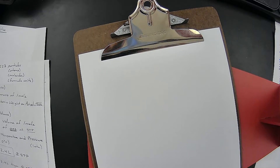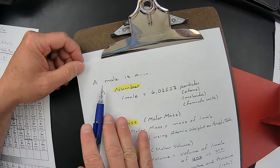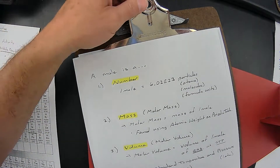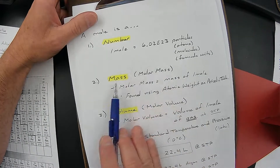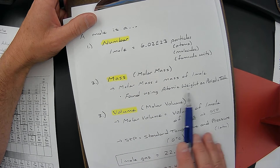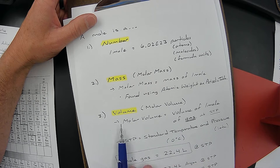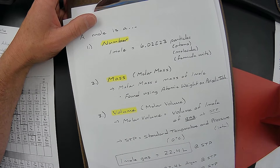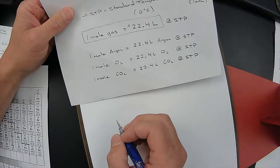Before beginning, I want to review what we've covered so far. In this unit, we've talked about the idea of a mole. A mole is equal to multiple different units. A mole is a number — it's equal to a specific number of particles. A mole is a mass, equal to the mass found from the atomic weight on the periodic table. And if you're dealing with a gas, a mole is also a volume. But that mole is always for a specific substance.